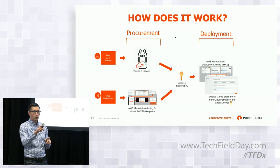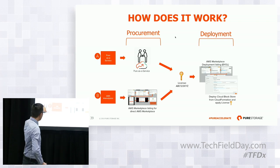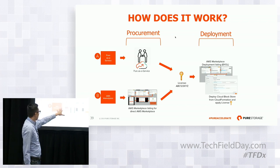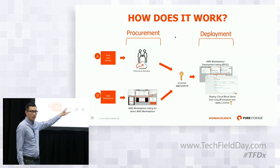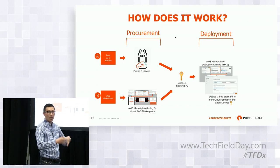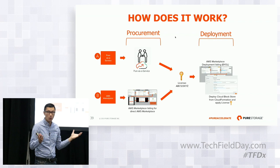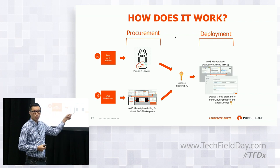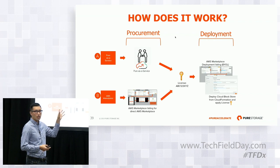Now to the deployment process. There's the procurement process and then there's the deployment. After procurement — either option — you end up with a license key to use as many Cloud Block Store instances as you want. You take that key and go to the deployment process, which is the same regardless of how you procured it.